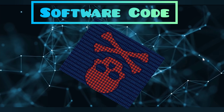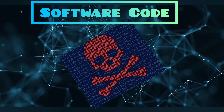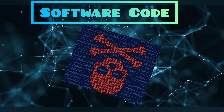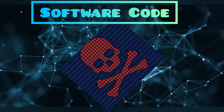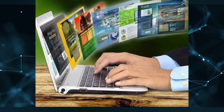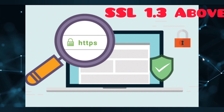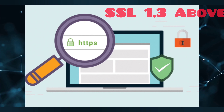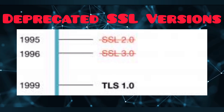What are software code vulnerabilities? When you write software code, you need to consider all aspects of security best practices. For example, if your software needs to communicate over the internet, you should use secure SSL or TLS protocols like version 1.3 and above.